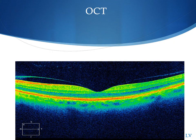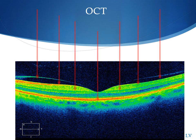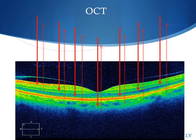When looking at an OCT scan, you can imagine it being similar to an ultrasound, but light is shining into the eyes, hitting the retinal tissues, and depending on the refractive index of each tissue, light is absorbed and then bounced back into the instrument, creating an image.